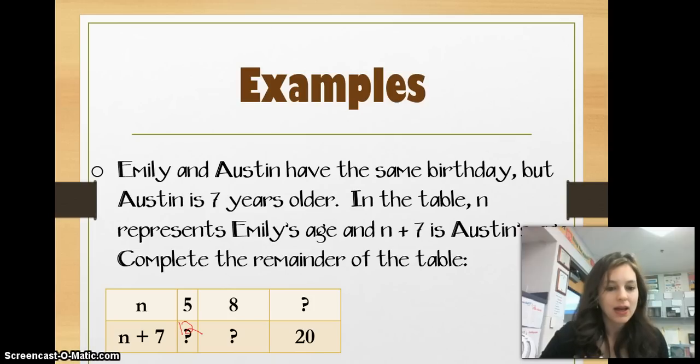So, if Emily is 8, that means that Austin is 8 plus 7, which is 15. And if Austin is 20, that means Emily is going to be 20 minus 7, which is 13.